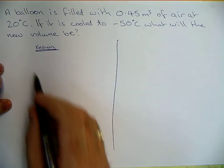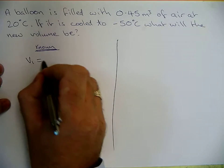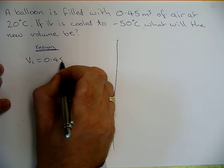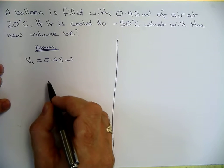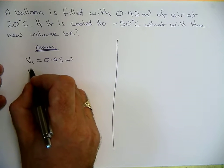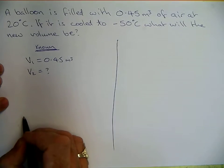We know it starts at that volume, we call that V1. It's at 0.45 cubic metres. And we know the second volume is what we are being asked to work out, so that gets a question mark.